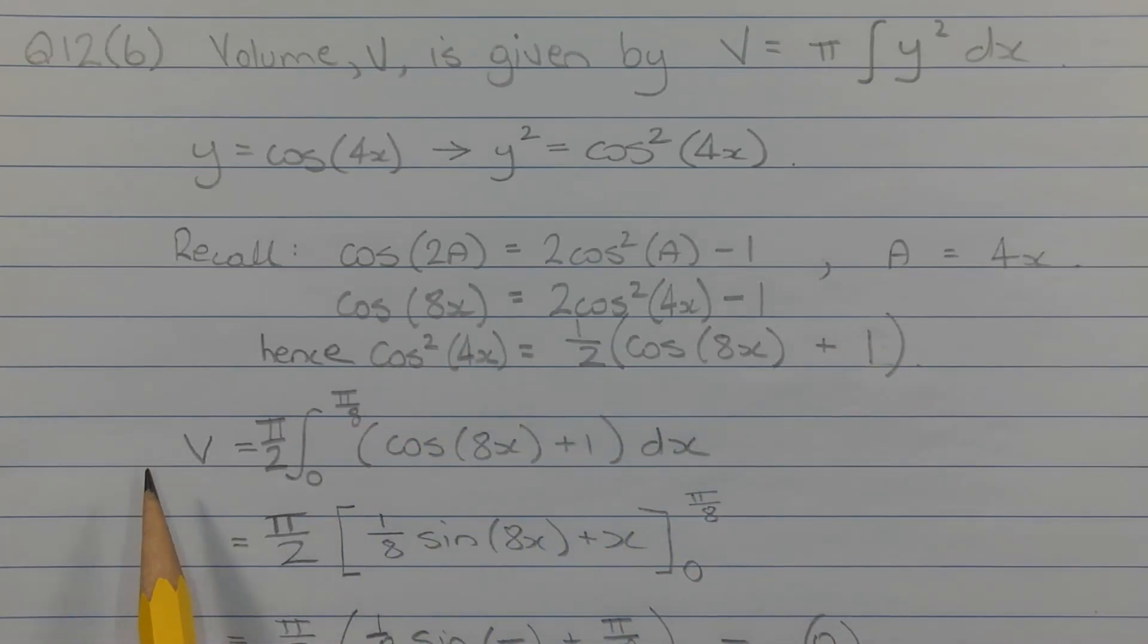So the volume V equals pi over 2. Now where this pi over 2 comes from comes from this 1 over 2 here. So I'm multiplying that by pi, which is where this pi over 2 originates. So we get V equals pi over 2 times the integral from x equals 0 to x equals pi over 8.